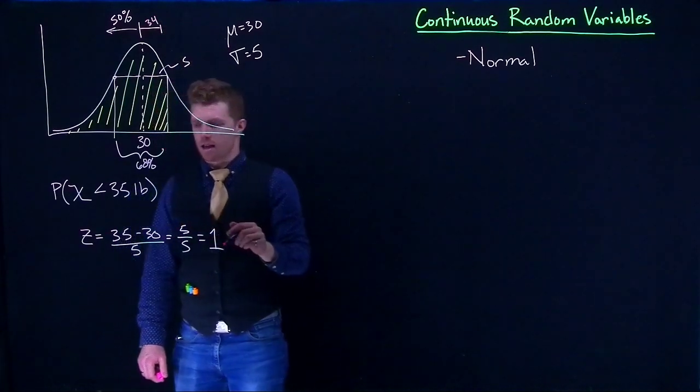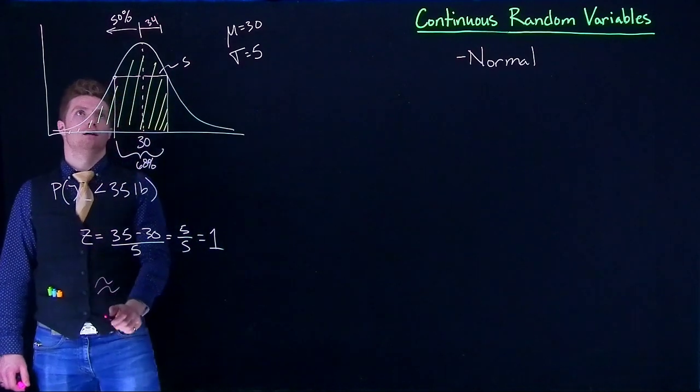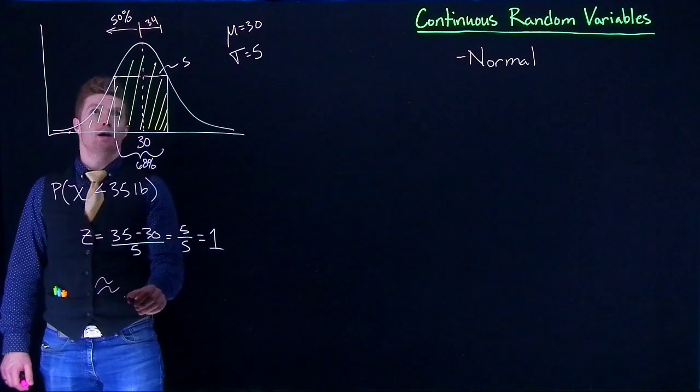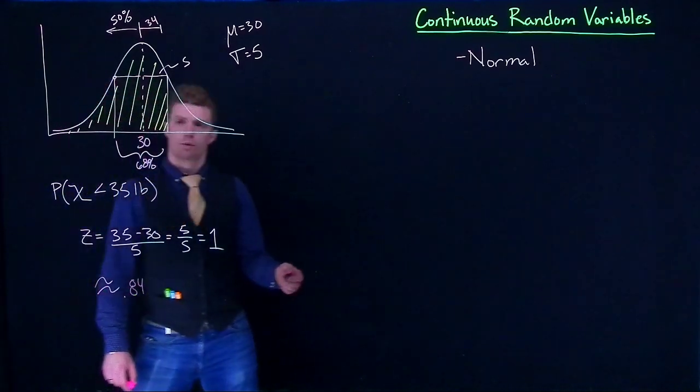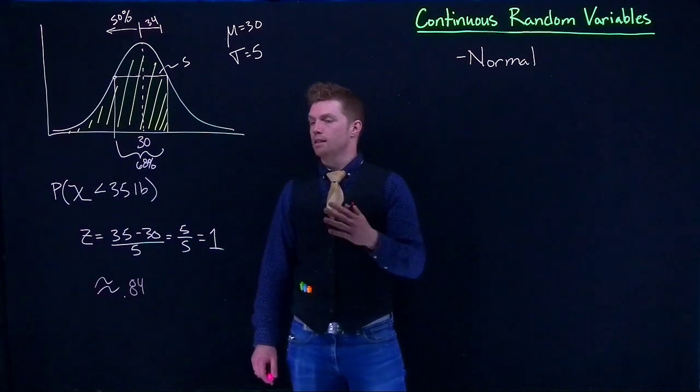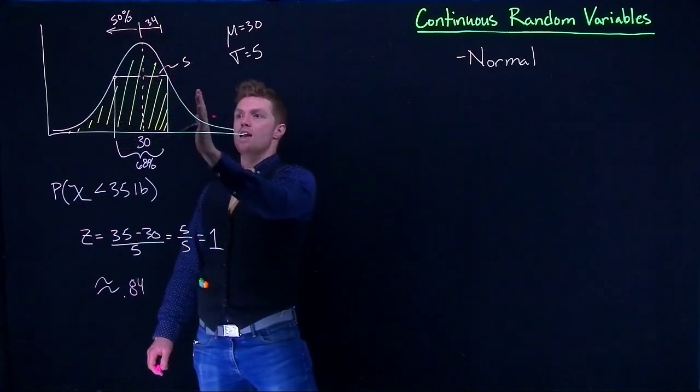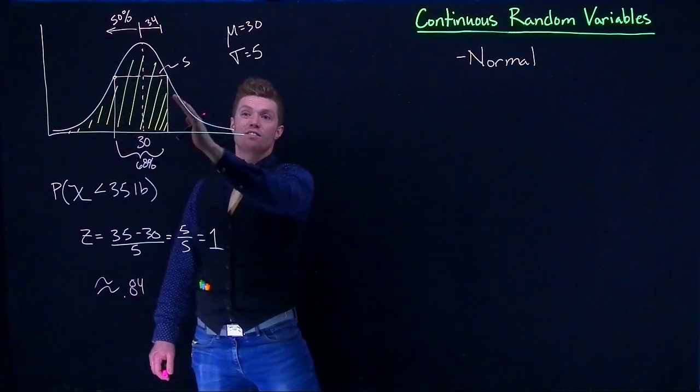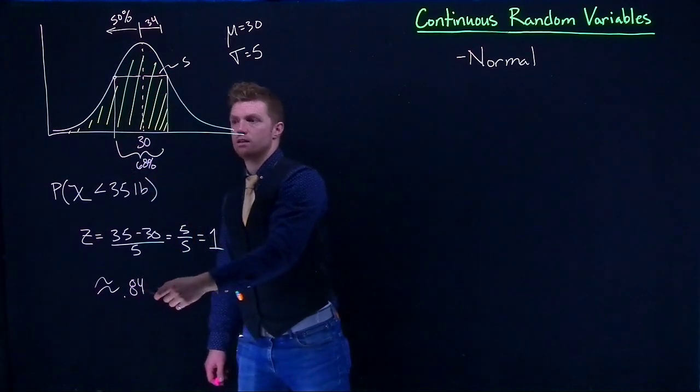So what I can say is that approximately we've got a 0.84% chance for just randomly selecting a dog that that dog's weight is going to be less than 35 pounds. So we're trying to figure out this area under the curve. And so the percent of the curve that is shaded in is this 0.84.